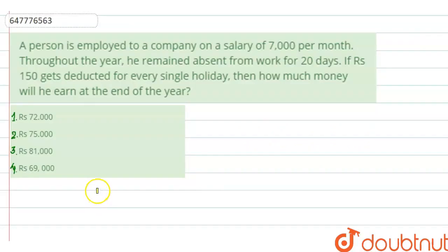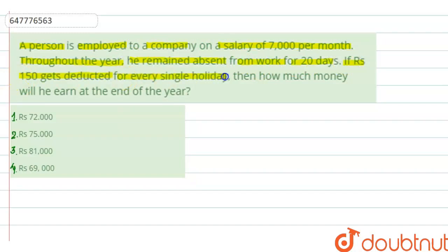Hello students, let us have a look at the question first of all. A person is employed at a company on a salary of Rs. 7,000 per month. Throughout the year, he remained absent from work for 20 days. If Rs. 150 gets deducted for every single holiday, then how much money will he earn at the end of the year?